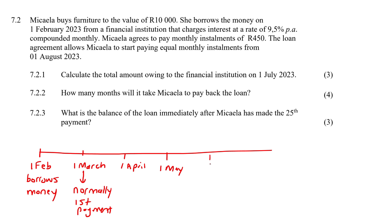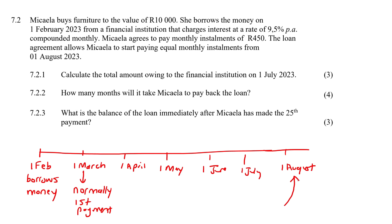Then the third payment, June — sorry — 1 July, and 1 August. Now Makayla only starts making her first payment on 1 August. So how many payments did she miss? Well, you mustn't count the very first one because normally we start there.